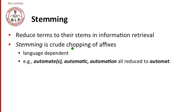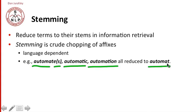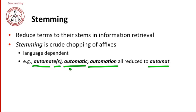The English words automate, automates, automatic, automaton — we'd like them all to refer to the same stem: 'automat.' So stemming is like a simplified version of lemmatization, where we pick a prefix of the word to represent it and chop off all the suffixes leading to that stem.